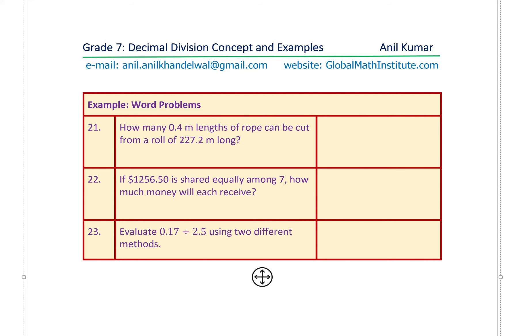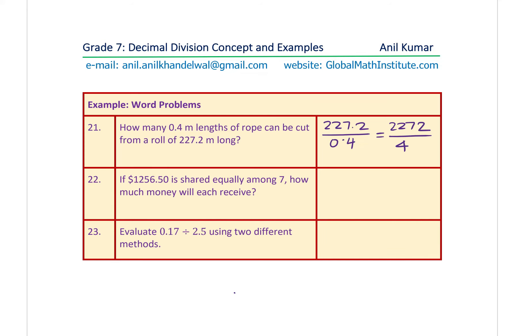Word problem 21: How many 0.4-meter lengths of rope can be cut from a roll of 227.2 meters? We divide 227.2 by 0.4. Remove one decimal place from both: 2272 divided by 4. Dividing: 4 goes into 2272 to give 568. So we can cut 568 lengths of rope.